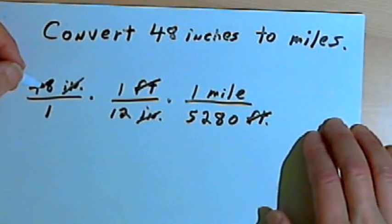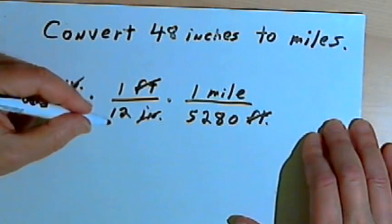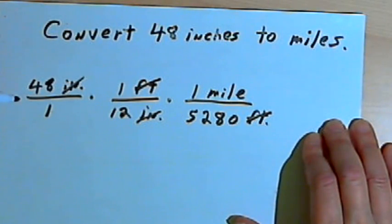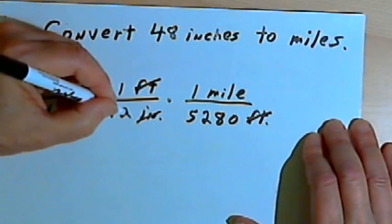We can simplify this a bit more. I've got 48 as a numerator and 12 in one of the denominators. So I can divide both of those numbers by 12. 48 divided by 12 is 4, and 12 divided by 12 is 1.